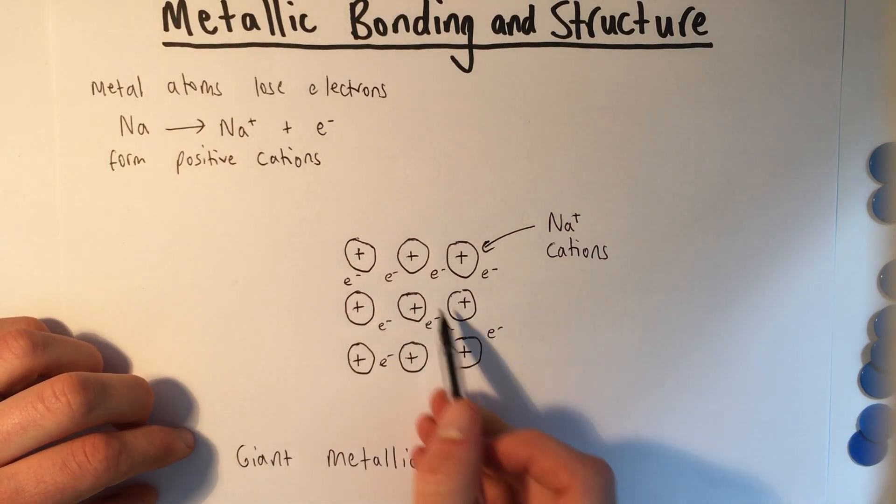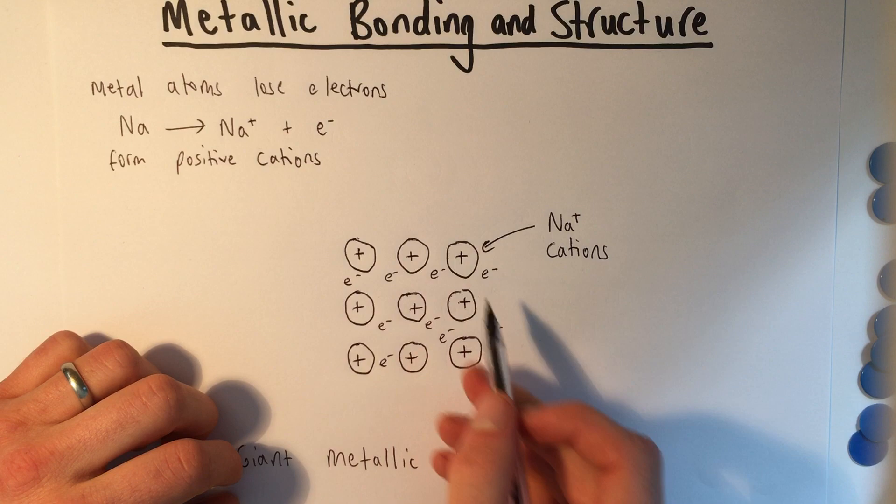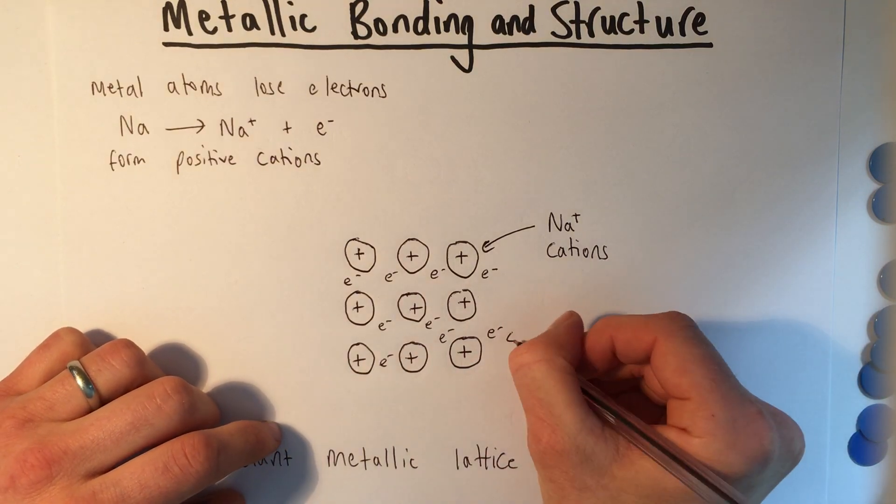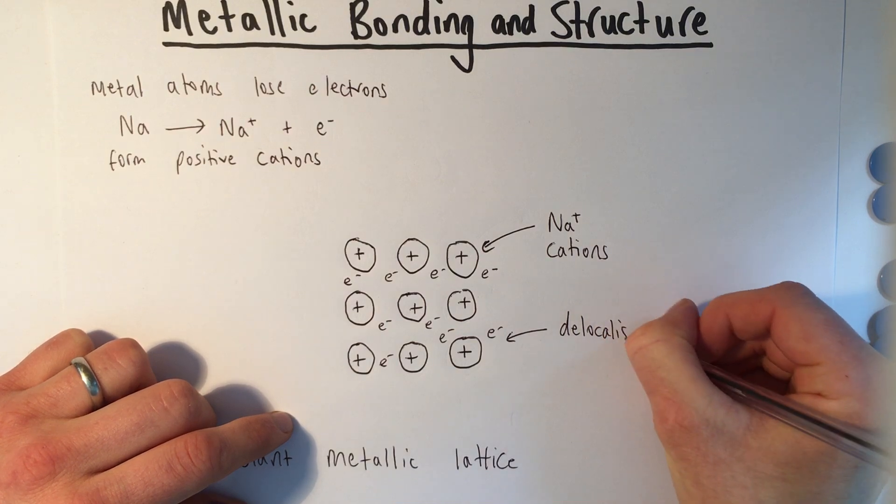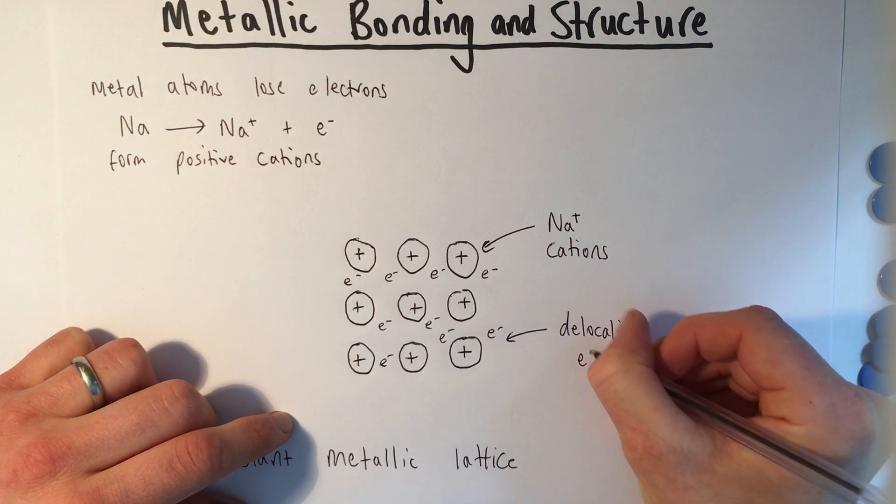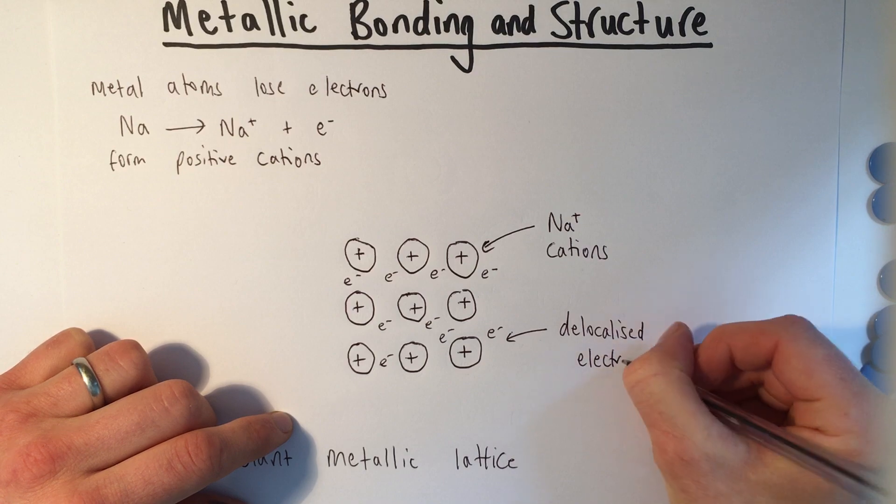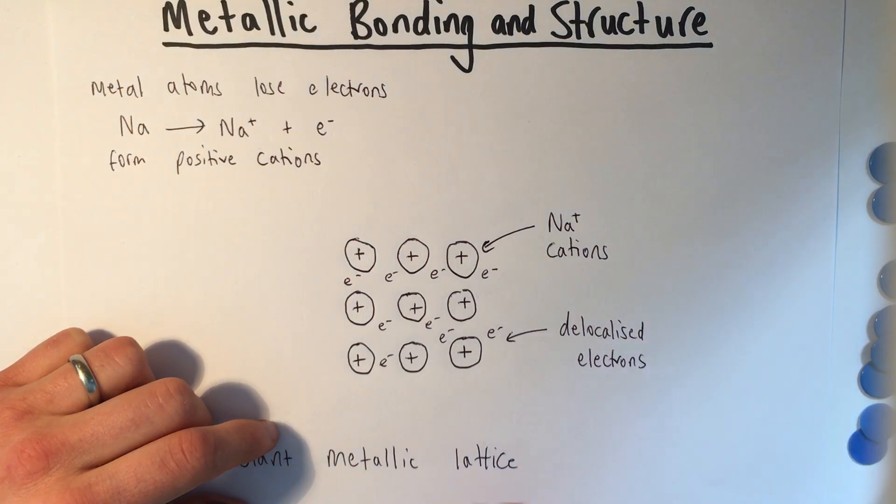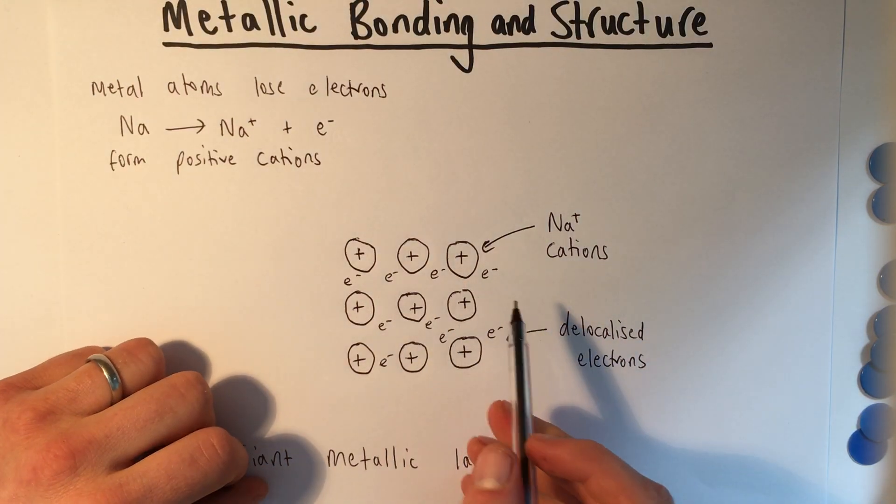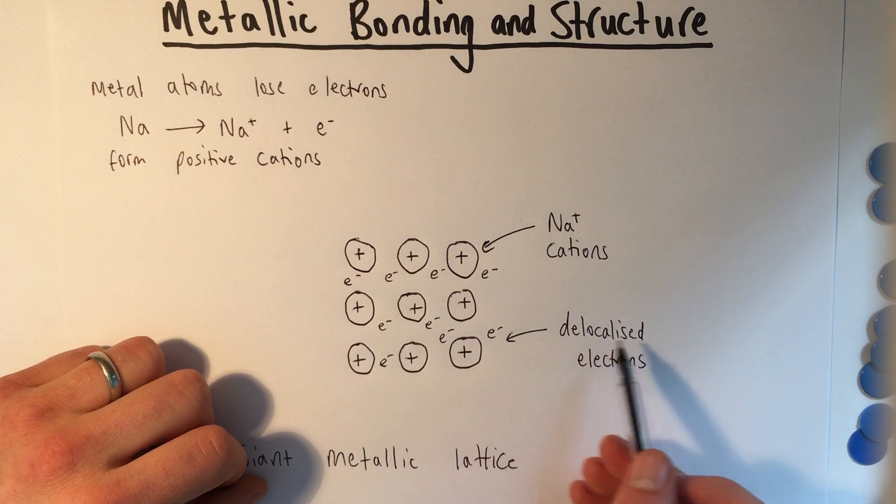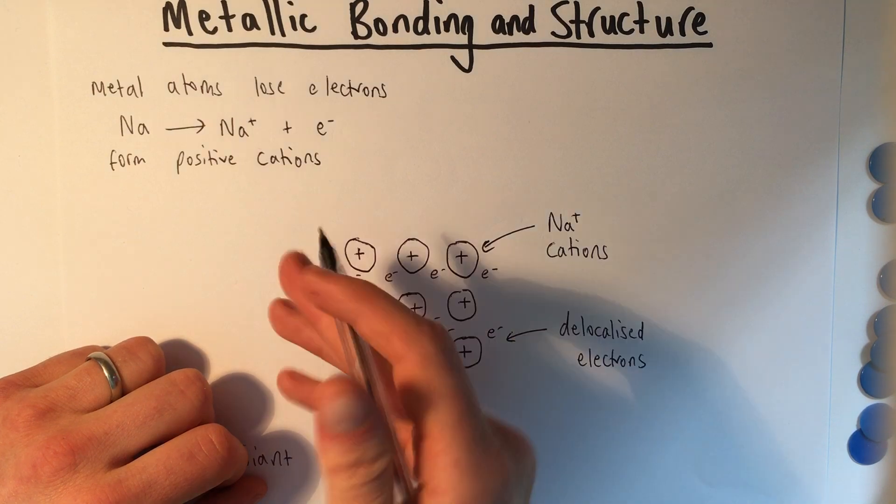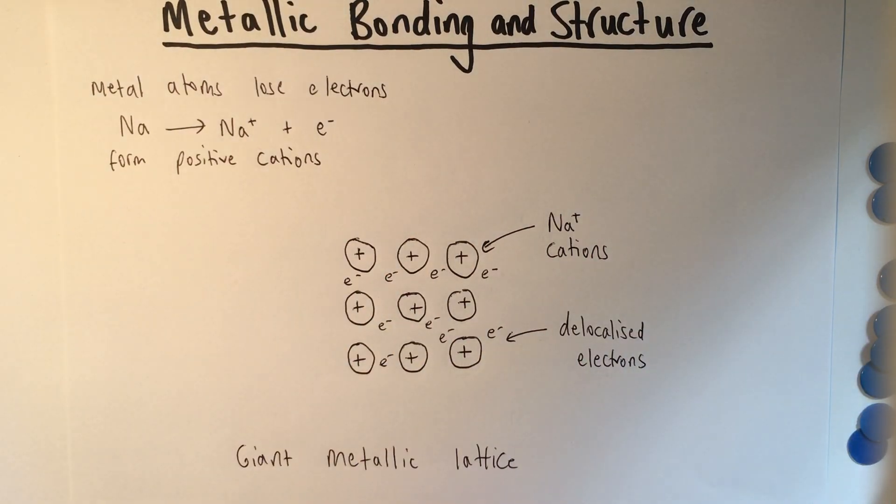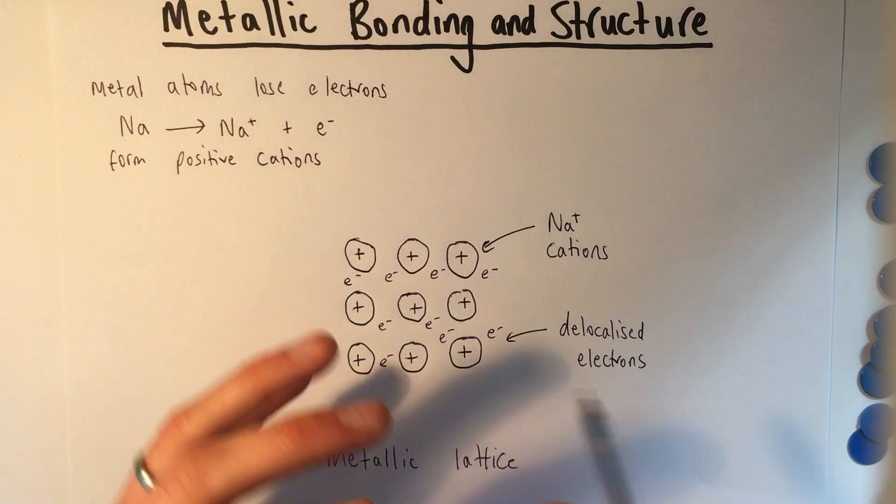Okay, you'll see that I've not put those in a consistent pattern. I've put those randomly. I'm going to label those delocalized electrons. Because electrons are so small and light, they're not held in place. They're able to move around freely. And that's what the word delocalized means. It means they're no longer held to their cation. It means they're able to move around freely. So that is what all metals will look like in terms of their structure.